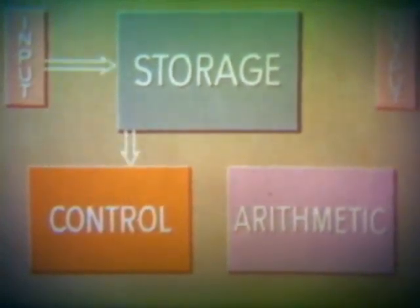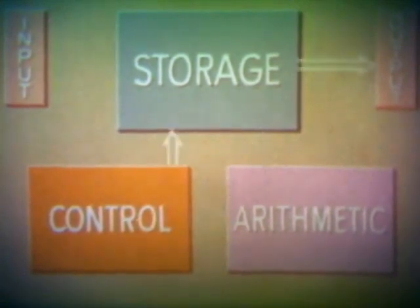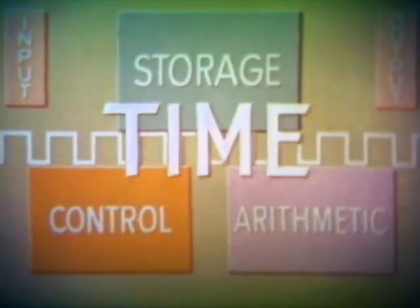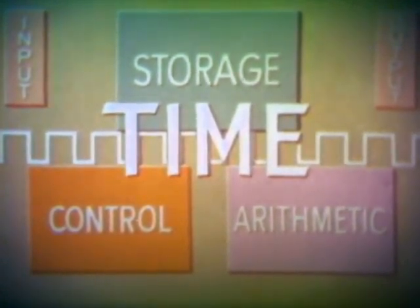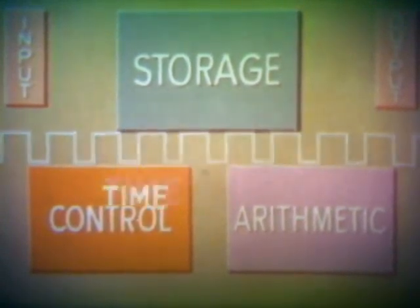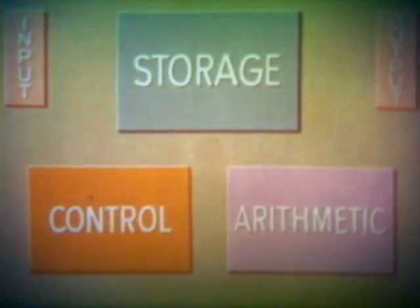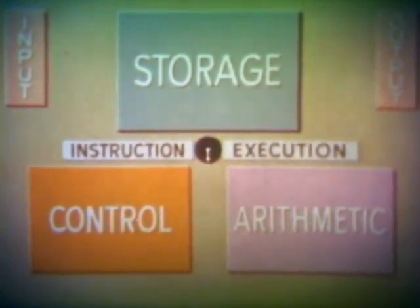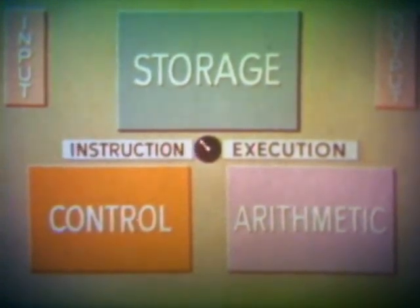Now the control unit — the nerve center that makes the computer operate by automatically selecting instructions, interpreting them, and causing them to be executed. Time is a key factor in control for sequencing, for clocking in millionths of a second, and for cycling. The cycling involves two operations: instruction and execution. These are performed alternately and continuously throughout the problem-solving process.